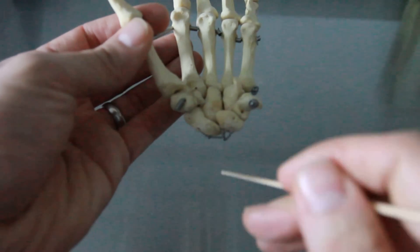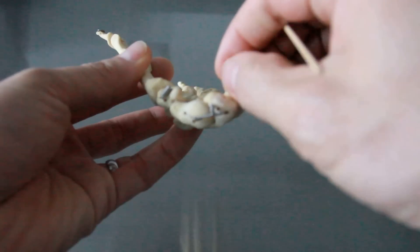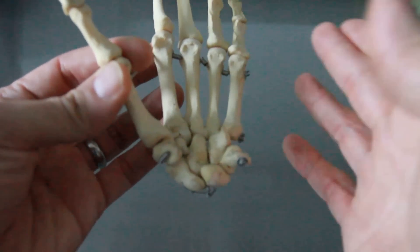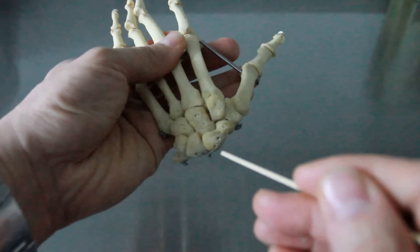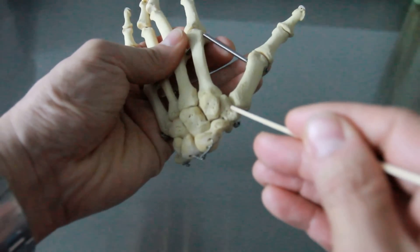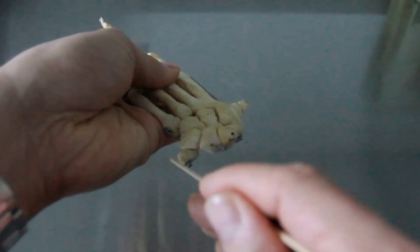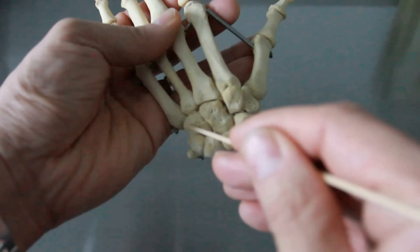So again, let's do this all in a row. Scaphoid, lunate, triquetrum, and then pisiform is that little guy that hangs off. Trapezium, trapezoid, capitate, hamate. You can do it on the other side too, as long as you can see which one touches the metacarpals.